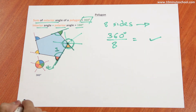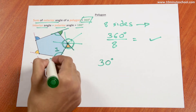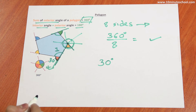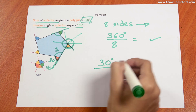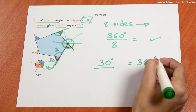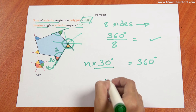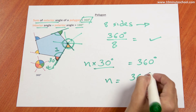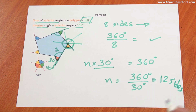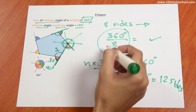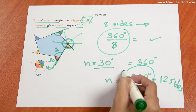On the other hand, another type of math problem can be: if each exterior angle is 30 degrees, and you need to find the number of sides of the polygon. Since the sum of exterior angles is 360 degrees, we need to do 360 divided by 30, which gives 12 sides. So: 360 divided by number of sides gives the angle, and 360 divided by the angle gives the number of sides.